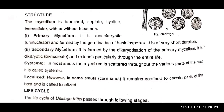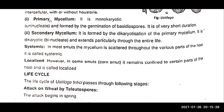The primary mycelium is monokaryotic, formed by germination of the teliospores and is of very short duration. The secondary mycelium is formed by the dikaryotization of the primary mycelium. It is dikaryotic, binucleate, and extends practically through the entire life of the organism.